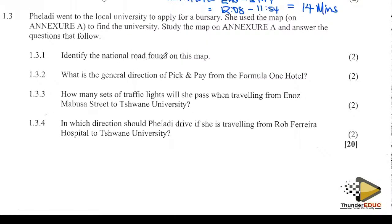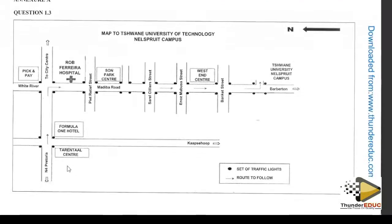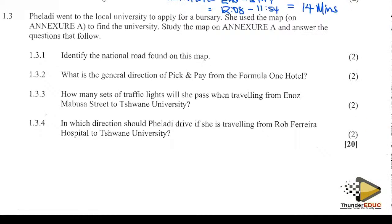Identify the national road found on this map. Going to annexure A — the national road is this one here, on any form. We write it there: National Road 4.